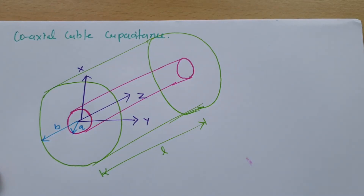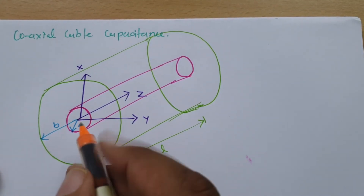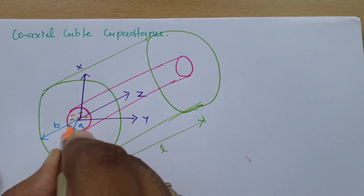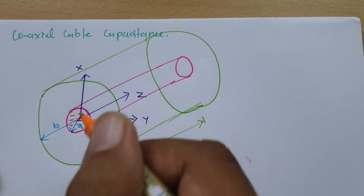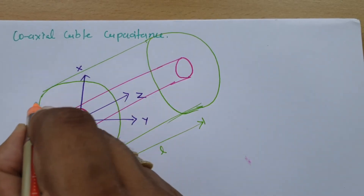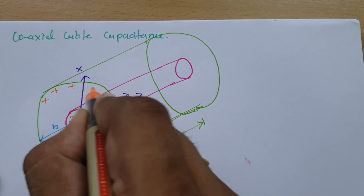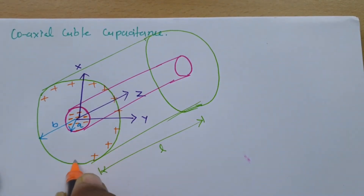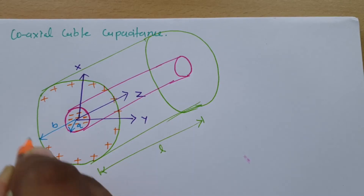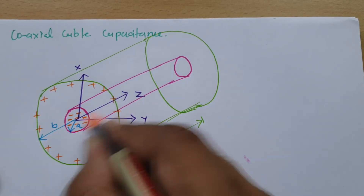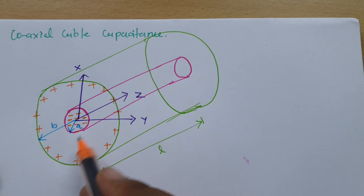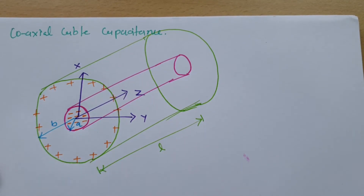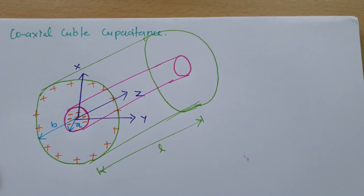Now here, the inner conductor is having negative charge, and the outer conductor is having positive charge — as you can see it over here.